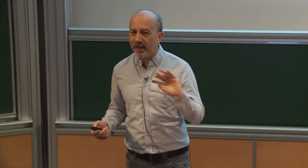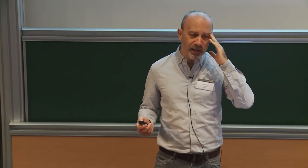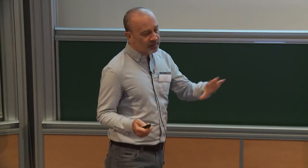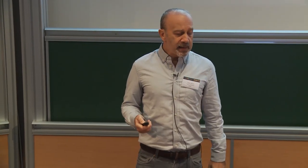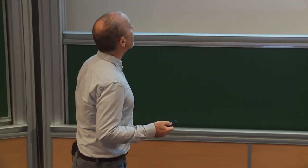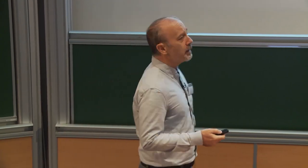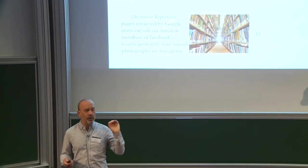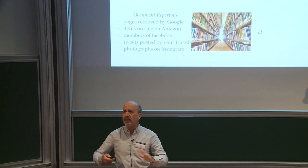Let me start with a very general scenario that explains why we as computer scientists come to like the idea of centrality. I describe this as an information retrieval system, but it's in fact a much more general thing. I have a document repertoire — whatever it is. It may be the set of pages retrieved by Google, or the set of items on sale on Amazon, or the members of a social network like Facebook. I will call the objects there 'documents' and write D for the set of documents. Think of D as finite but very, very large.